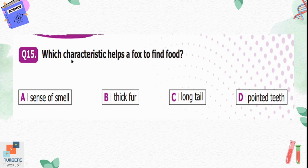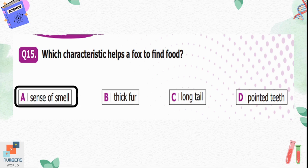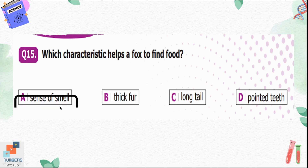Question number fifteen: which characteristic helps a fox to find food? Option A, sense of smell; B, thick fur; C, long tail; D, pointed teeth. The sense of smell is the most useful sense for a fox to find food. Out of the given options, sense of smell can help a fox find food, so option A is the correct option.